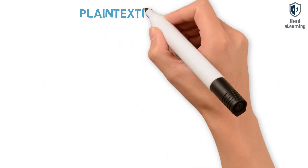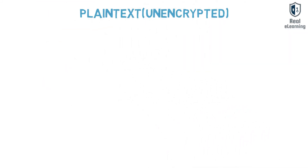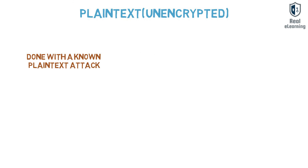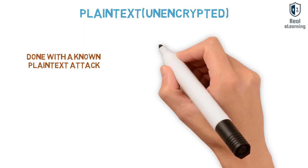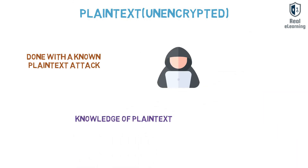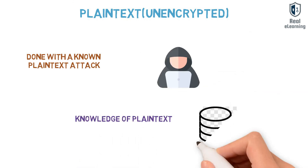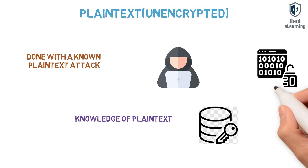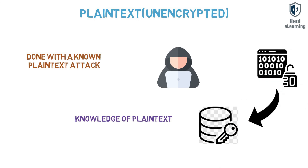Plaintext unencrypted attack is done with a known plaintext attack. The attacker has knowledge of the plaintext and the corresponding ciphertext. This information is used to decrypt the rest of the available ciphertext.